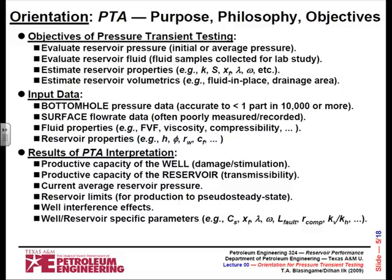The first thing is to provide some orientation — the purpose, the philosophy, and the objectives of pressure transient testing. The objectives of pressure transient testing, number one, is to evaluate the reservoir pressure. Sometimes people use it to evaluate the initial reservoir pressure, but in reality, how many times have we seen people run a pressure transient test to evaluate average reservoir pressure? Zero. In modern times, nobody's going to shut in a well for that long.